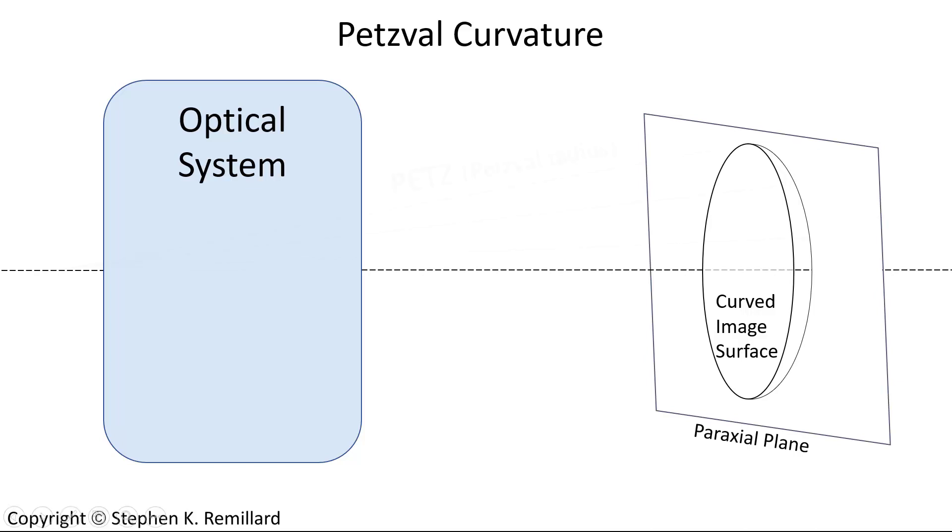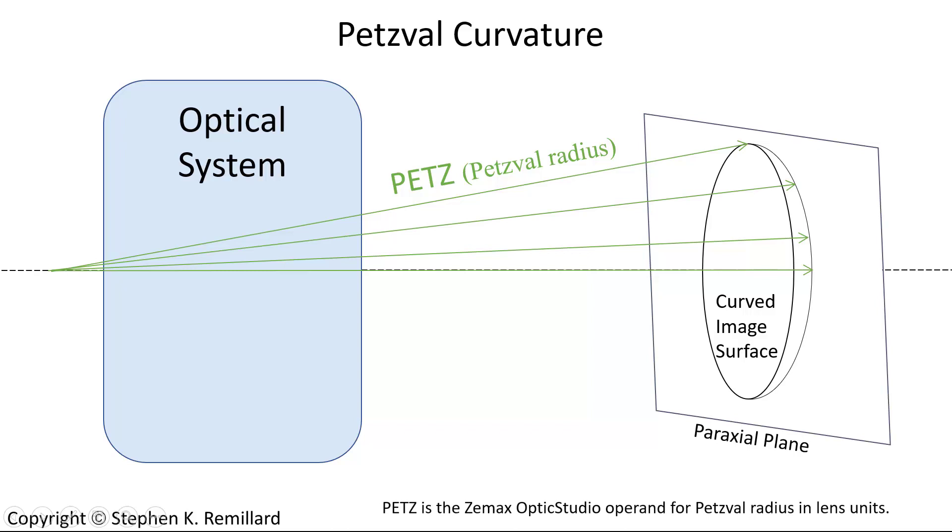You can imagine how this has to happen if you consider rays emerging from a single point somewhere out in space. They propagate toward the image surface. They'll all strike an image surface, but if they're all going to go the same distance, the image surface that they'll strike will be a sphere. And the radius of the sphere is called the Petzval radius. Petz is the symbol in Zemax OpticStudio.